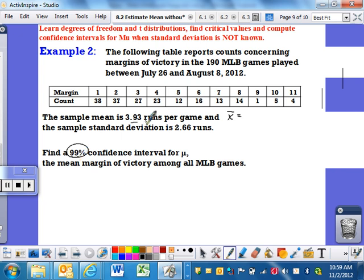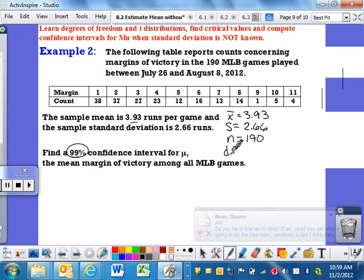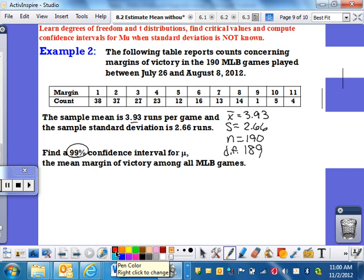I need to know my X bar. We're talking about Major League Baseball games played this year, there's 190 games, and the table tells you the margin of victory. What we're going to do is try to figure out with 99% confidence what the average margin of victory was for Major League Baseball games for the entire year. My X bar, my average, I told you was 3.93 runs. My standard deviation in this example, or this sample, 2.66, and my N is 190, which means my degrees of freedom is 189.